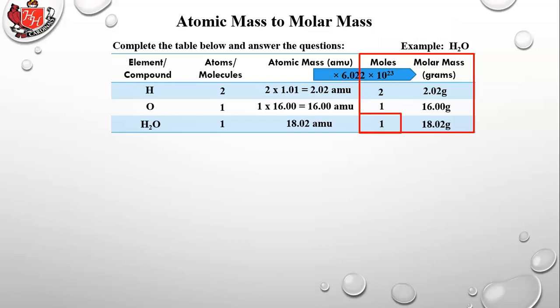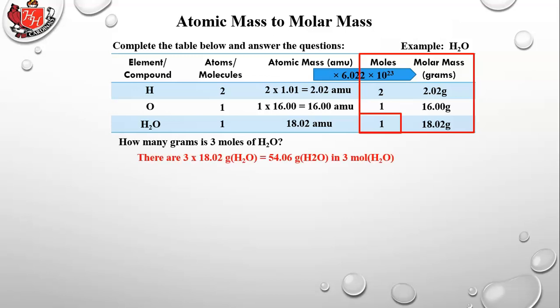Let's do some practice problems. How many grams is three moles of H₂O? One mole of water is 18.02 grams, so three moles is 3 × 18.02 = 54.06 grams of H₂O. How many moles of hydrogen are needed to make four moles of H₂O? From the table, one mole of H₂O requires two moles of hydrogen, so four moles of H₂O requires 2 × 4 = 8 moles of hydrogen.